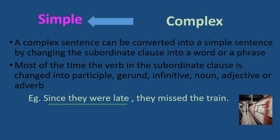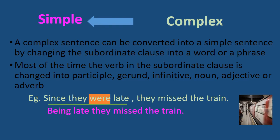For example: 'Since they were late, they missed the train.' 'They missed the train' is the main clause. 'Since they were late' is the subordinate clause. To convert to simple: 'Being late, they missed the train.' We change 'since they were late' to the participle form 'being late.'